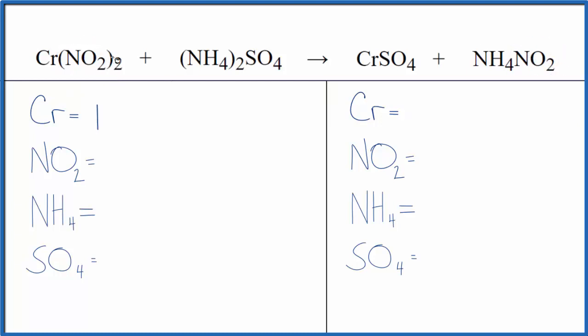So in the reactants here, we have our nitrite times two. So one times two, we have two of those. The ammonium ion, NH₄, we have it here and here, another polyatomic ion. So we have the ammonium ion times two, we have two of those.